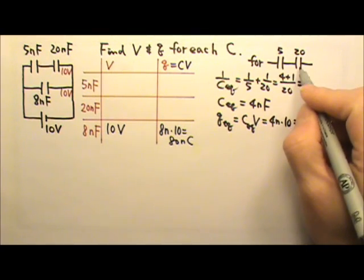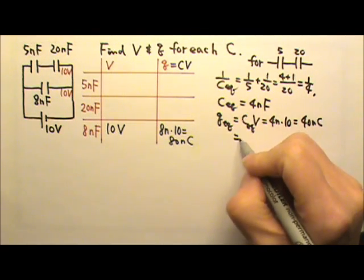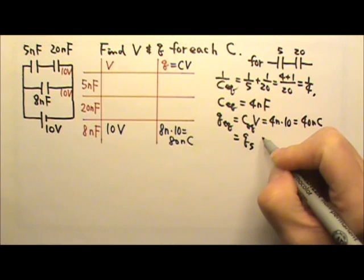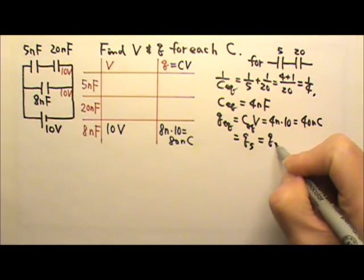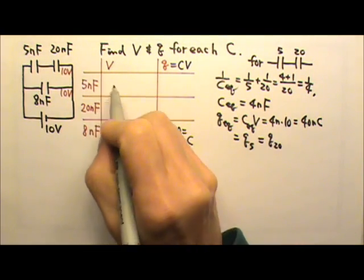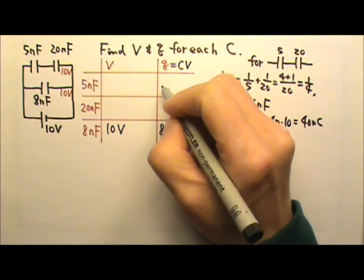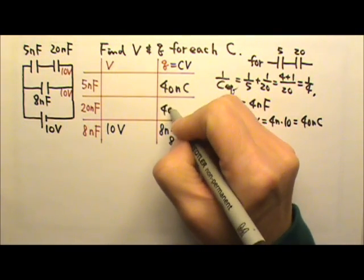And because they get the same charge, this is the charge on the 5 nanofarad. It is also the charge on the 20 nanofarad. So now we know the charge here is 40, 40.